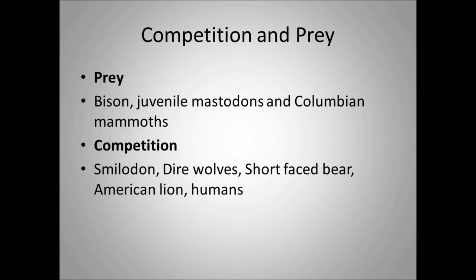The prey Homotherium would go after included prehistoric bison — a foot to two feet taller than the bison we see today — and juvenile mastodons and even juvenile Columbian mammoths. These animals were going after Columbian mammoths most of the time, not the woolly mammoths, because the woolies were further north and the Columbians were further south. The Texas cave site actually contained bison and juvenile Columbian mammoths, making it a very rich behavioral site.